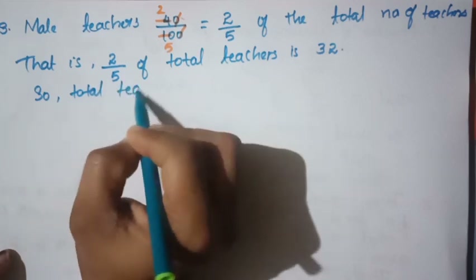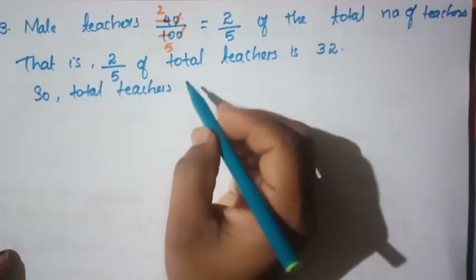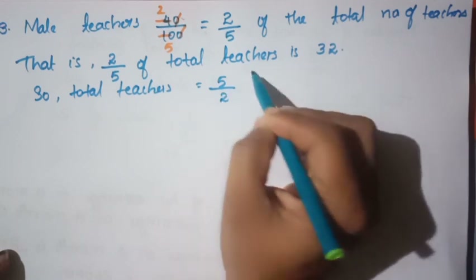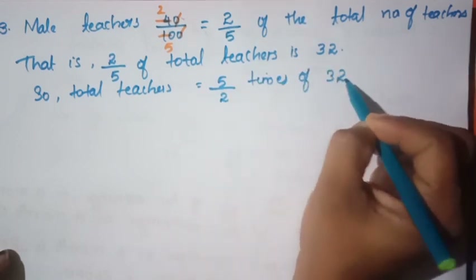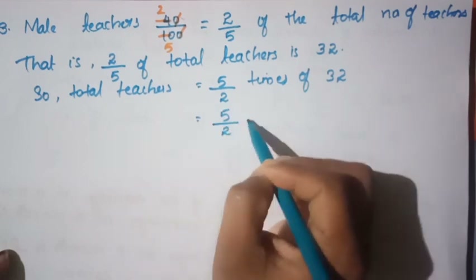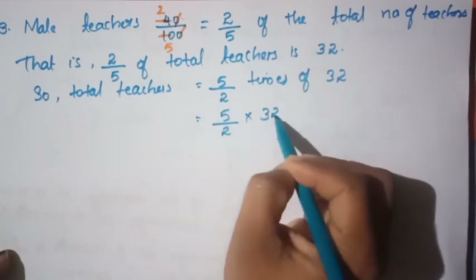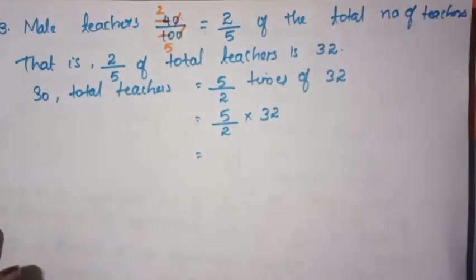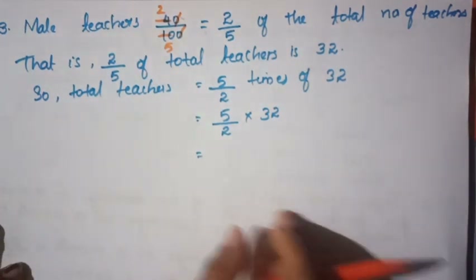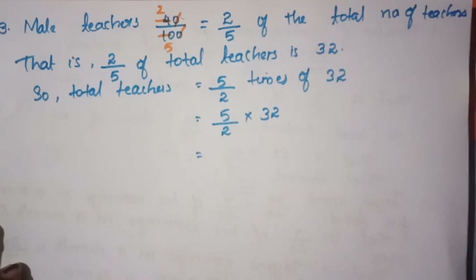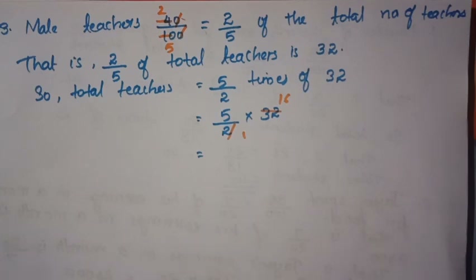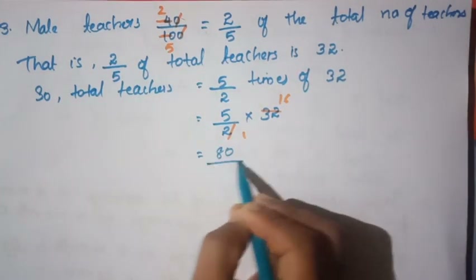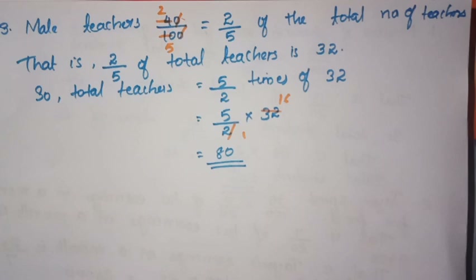Total teachers equals 5 by 2 times of 32. We calculate: 2 into 16 is 32, and 16 into 5 is 80. There are 80 teachers in the school.